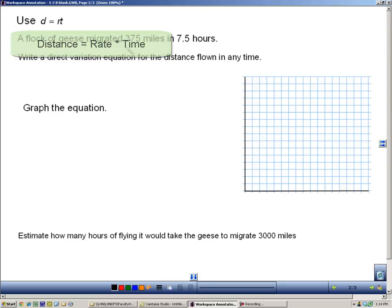Here we're told a flock of geese migrate or travel 375 miles in 7.5 hours, and we have to write a direct variation. Well, we know the distance they travel. We know that 375 miles is our d, and we know that the time they travel is 7.5 hours. But we don't know the rate, and that's what we need.